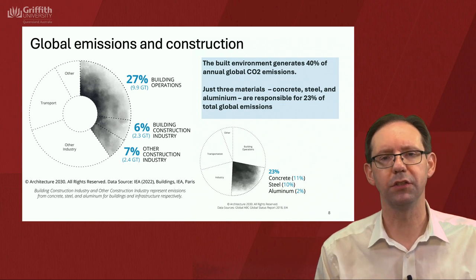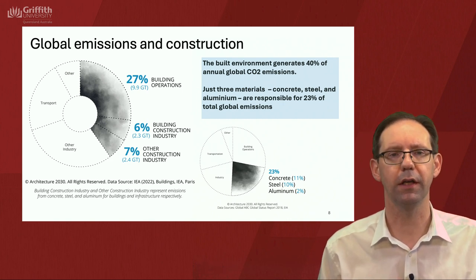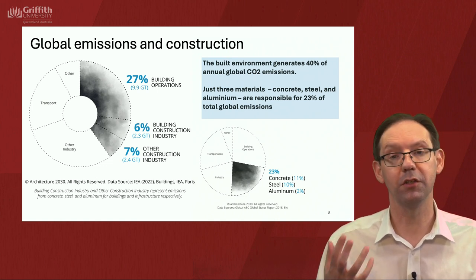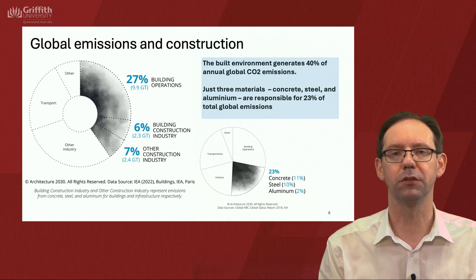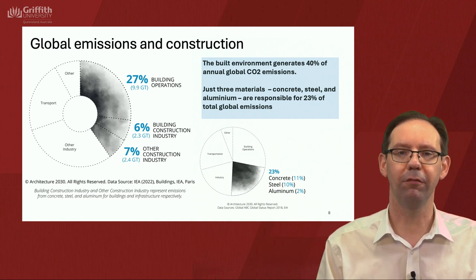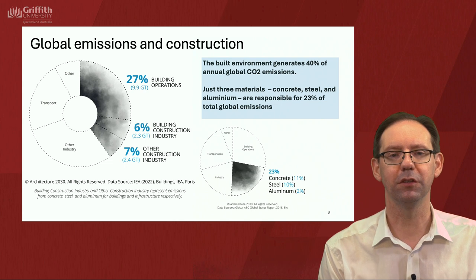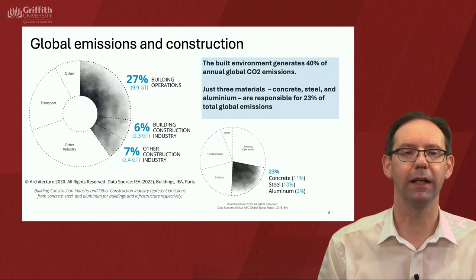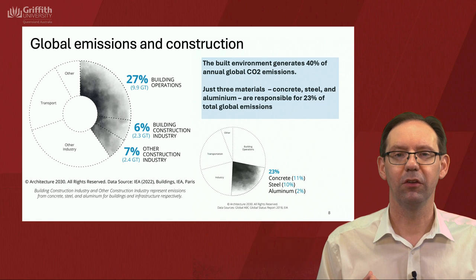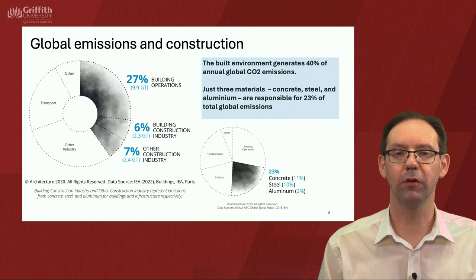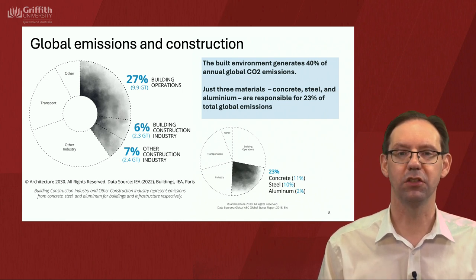One of the big challenges facing us is climate change. In terms of global emissions from construction, the built environment generates 40% of annual global CO2 emissions. That 40% shown on the left pie chart includes building operations and the building construction industry, but also other construction elements such as transport and infrastructure. That 23% attributable to materials — concrete, steel and aluminium — represents a large chunk of emissions.